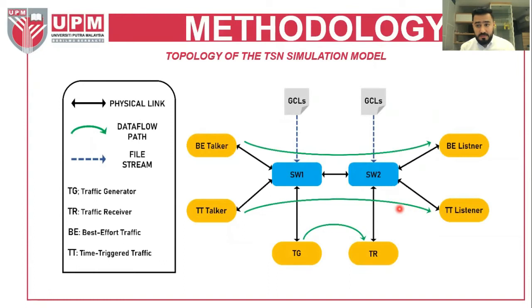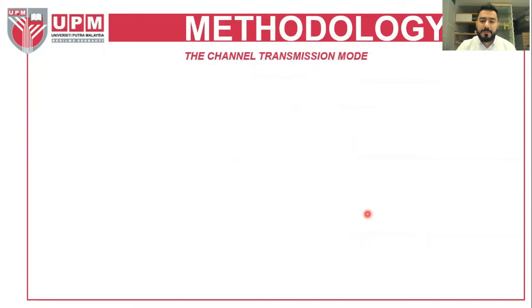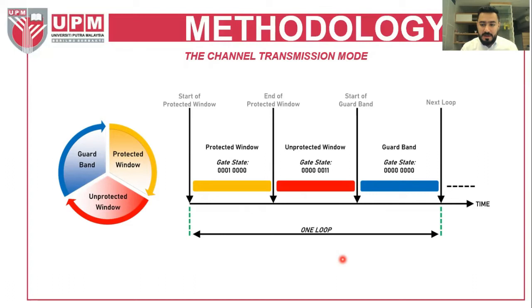This is the topology of the simulation based on our benchmark. We will have switches and nodes controlled by the gate control list, with best-effort talkers and listeners, and time-triggered talkers and listeners. The channel transmission mode has three parts: the protected window, opened for time-triggered traffic; the unprotected window, opened for best-effort and interference traffic; and the guard band, during which all gates are closed in preparation for the next cycle.